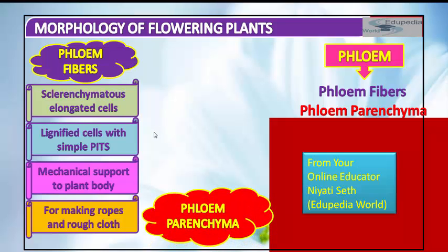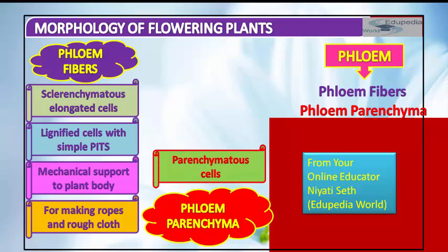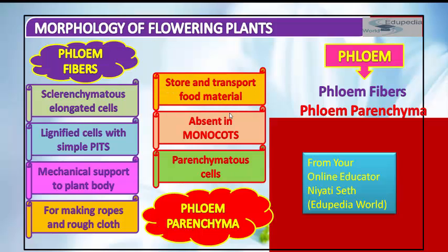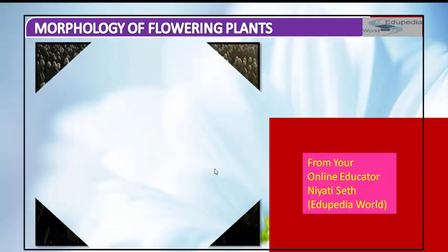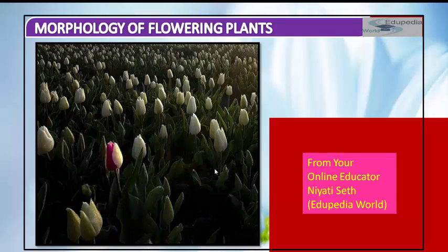Phloem parenchyma cells are parenchymatous, hence living in nature. The first-formed primary phloem consists of narrow sieve tubes and is referred to as proto-phloem; the later-formed phloem has bigger sieve tubes and is referred to as meta-phloem. Phloem parenchyma is absent in monocots. It stores and transports food material. This concludes the discussion of phloem as a complex permanent tissue.